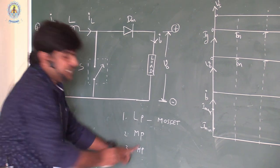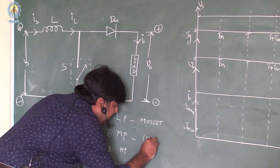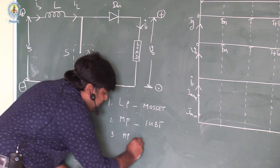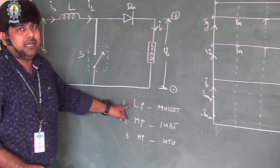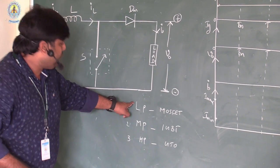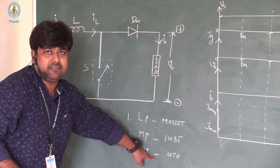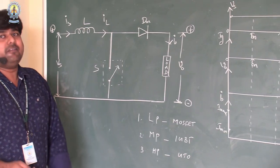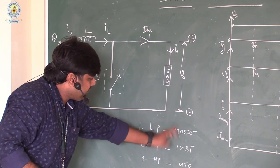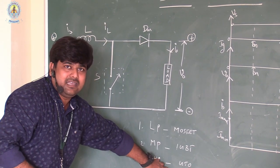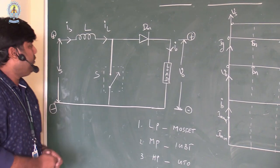For medium power applications, we prefer IGBT. For high power applications, we prefer GTOs. Based on the application, we consider different types of switching devices. For simplification purposes here, we can consider whatever switching device is needed as a simple switch.